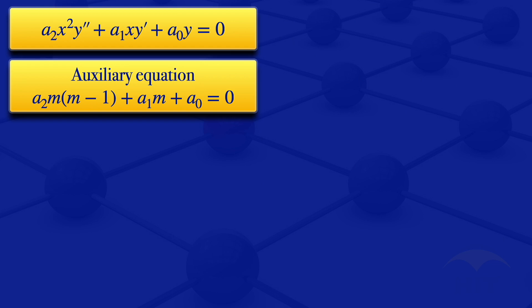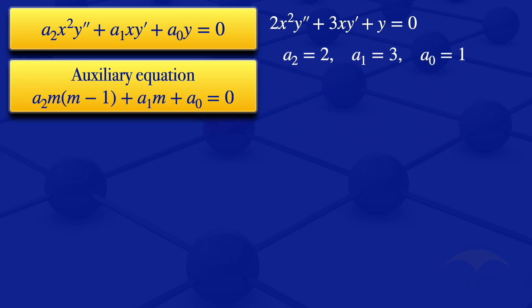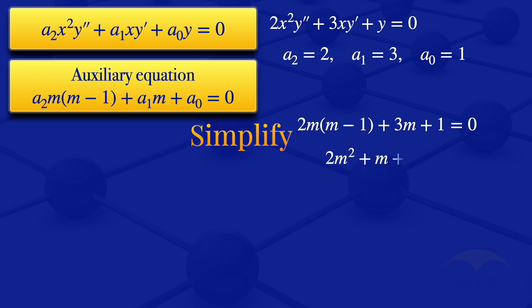Moving to the third question: 2x squared times y double prime plus 3x times y prime plus y equals 0. Comparing with the standard form, a2 equals 2, a1 equals 3, and a0 equals 1. Substituting into the auxiliary equation gives 2m(m minus 1) plus 3m plus 1 equals 0, which simplifies to 2m squared plus m plus 1 equals 0.